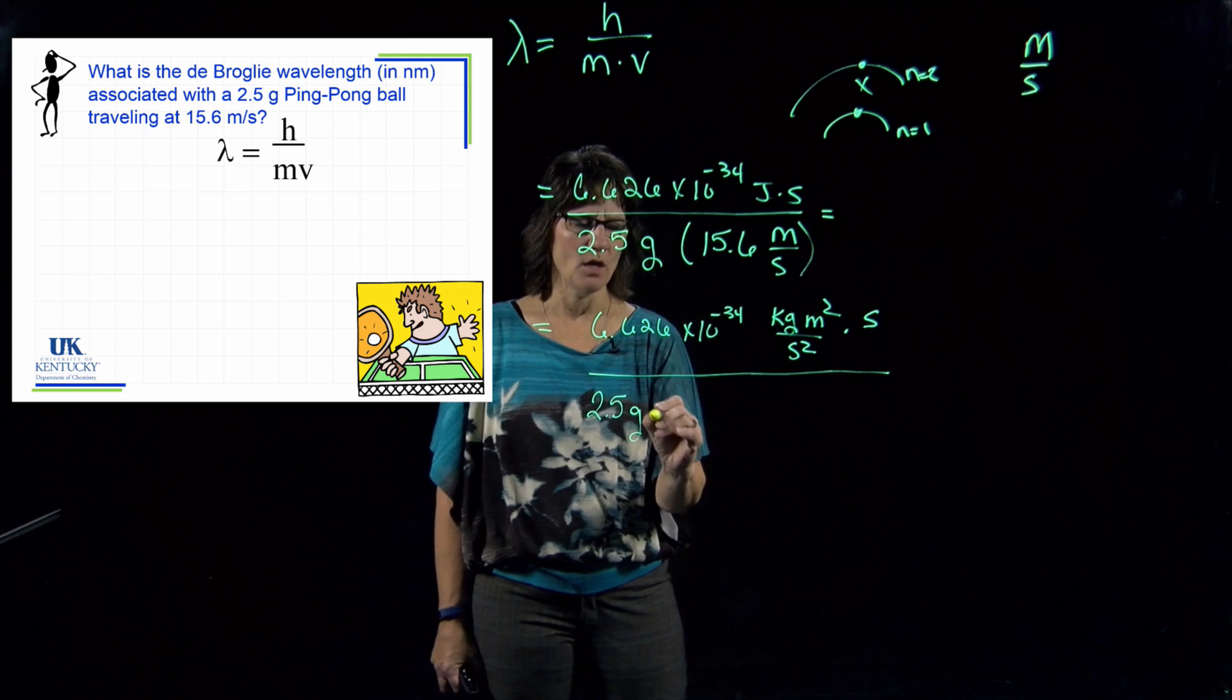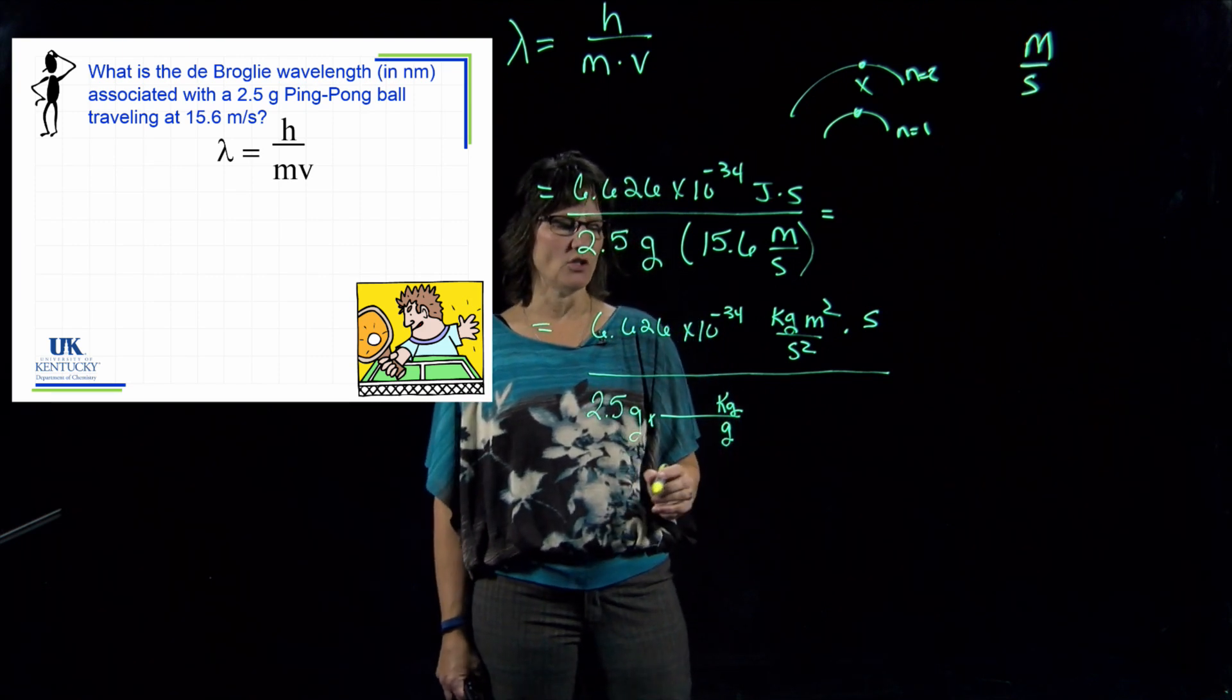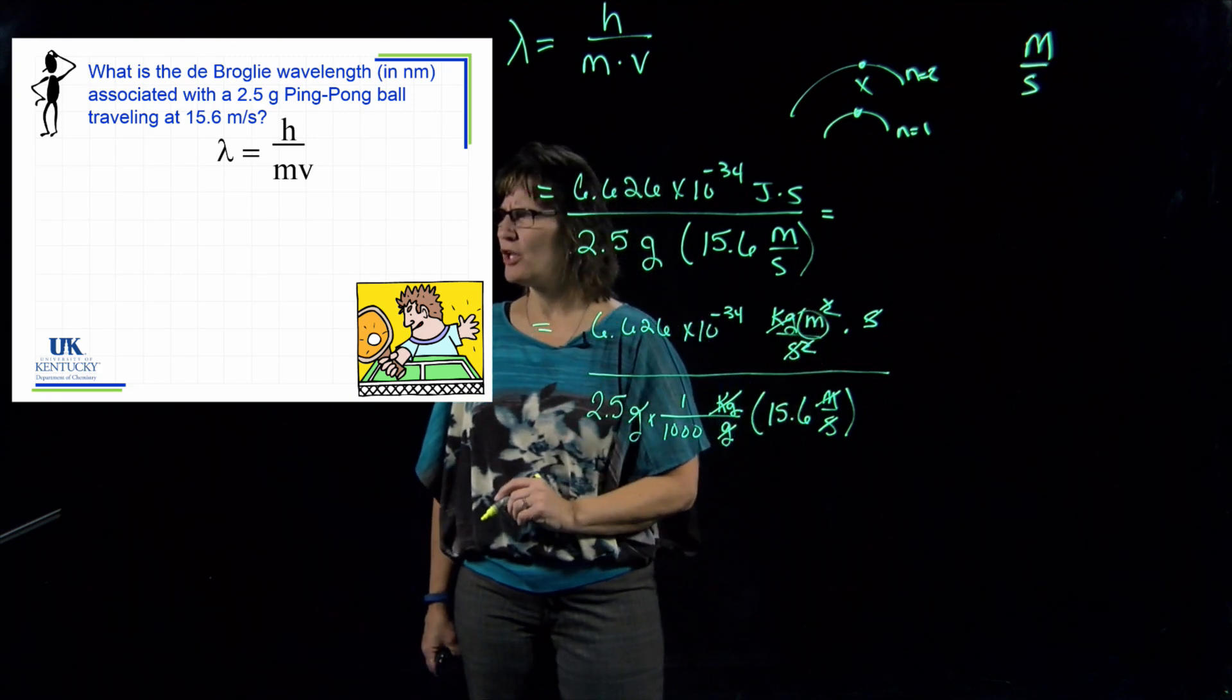So you always have to put kilograms into this equation. Kilo means a thousand, and there is that converted over to kilograms. And then I've got my meters per second, and I have meters and seconds here, so I don't have to do anything to that number. So now let's see if everything cancels that we need to cancel. The kilograms cancel, one of these meters cancels with one of those meters, one of these seconds cancels with one of those seconds, and that second cancels with the other one, and we're left with meters. They want to know what it is in nanometers, but let's get it in meters first.